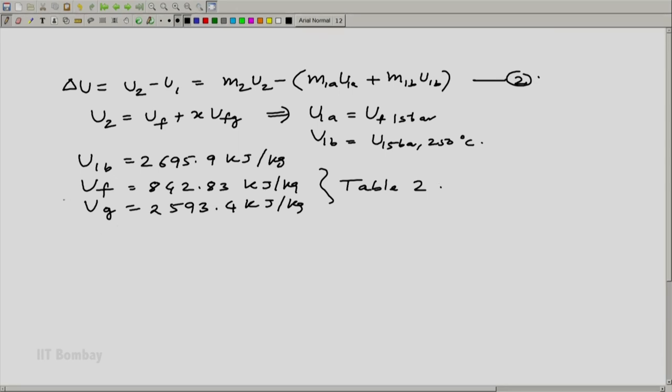So from this table, if I put this back in this equation, I will get u2 is equal to 842.83 that is uf plus 0.4273 ug minus uf. Putting these respective values over here, I get u2 is equal to 1590.85 kilojoule per kg.